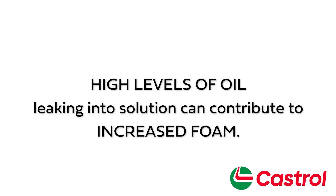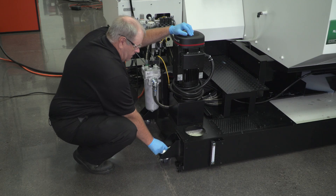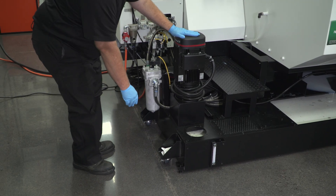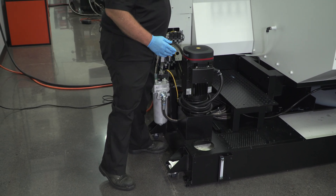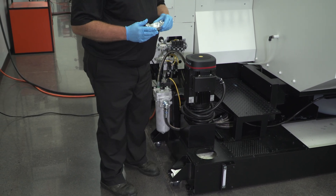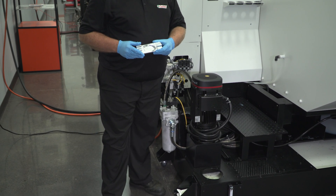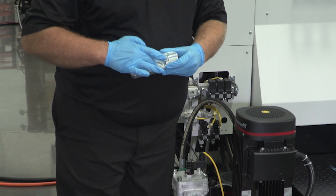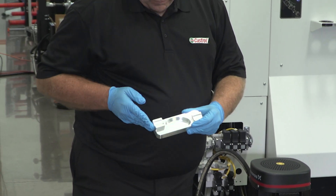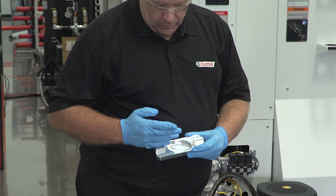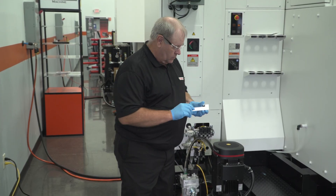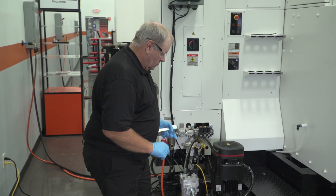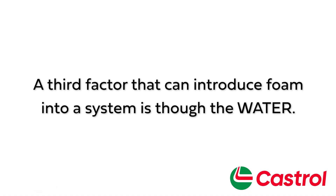Another contaminant that can be introduced inadvertently to the process are cleaners. Parts may carry over fluid from a prior process. Any residual cleaner that dries or pools in pockets can continue to build in the system over time and slowly change the foaming characteristics of the metalworking coolant.